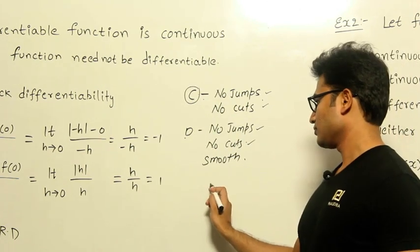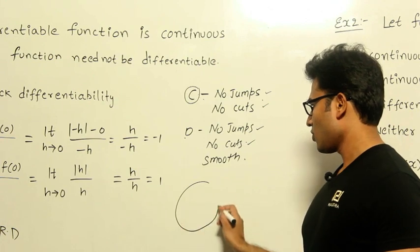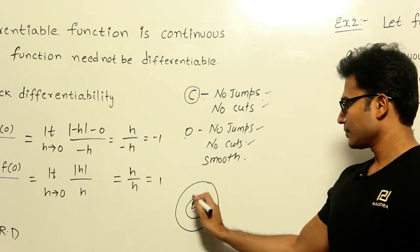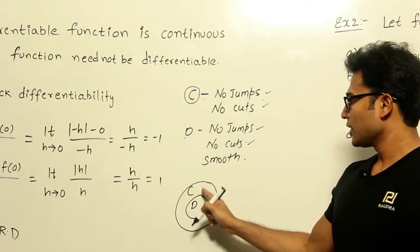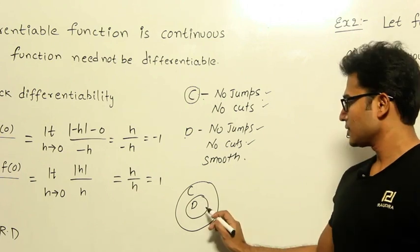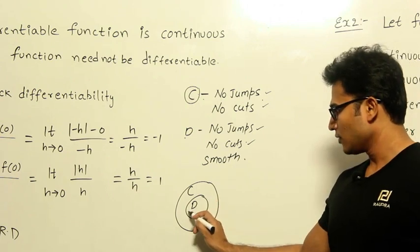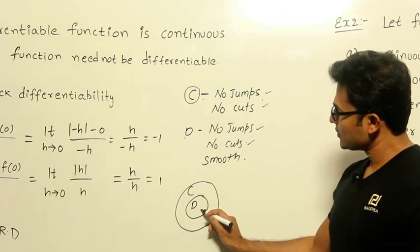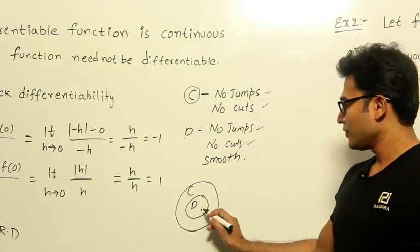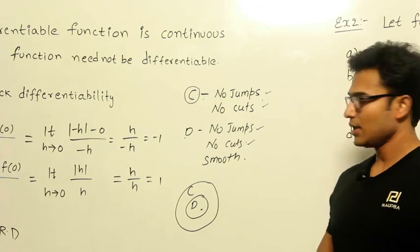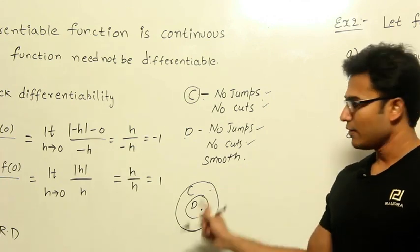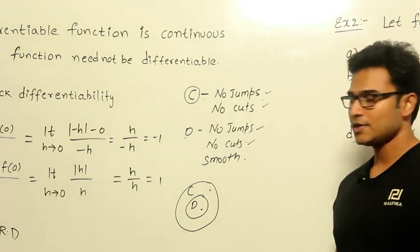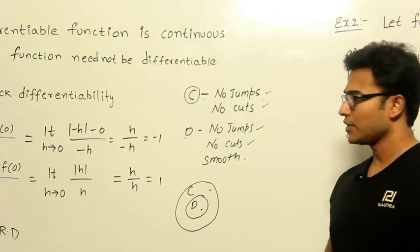But if it is known that a function is differentiable, it will definitely be continuous. Now if you want to see it in Venn diagram form — this is the set of all differentiable functions and this is the set of all continuous functions. If a function falls in the differentiable set, then it is definitely going to be continuous. But there are some functions which will be continuous but not differentiable.